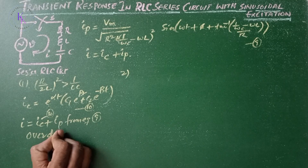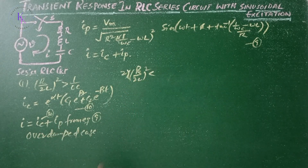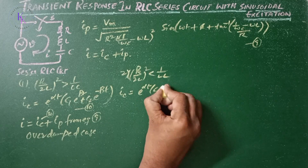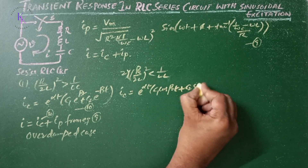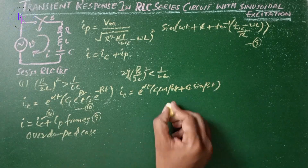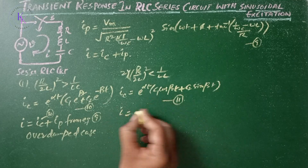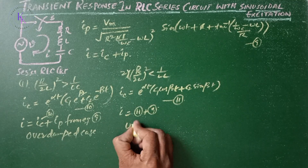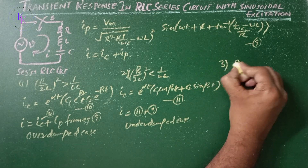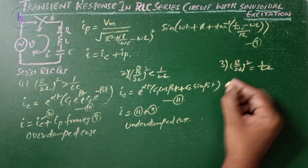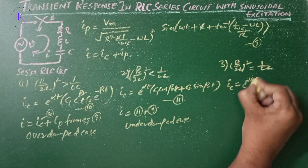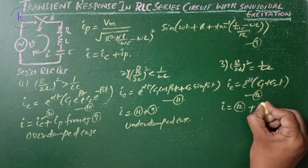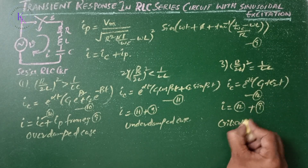Case 2 is the under-damped case where (R/2L)² < 1/(LC): ic = e^(αt)·[C1·cos(βt) + C2·sin(βt)], and i = ic + ip. Case 3 is the critically damped case where (R/2L)² = 1/(LC): ic = e^(αt)·(C1 + C2·t), and the net current i = ic + ip.